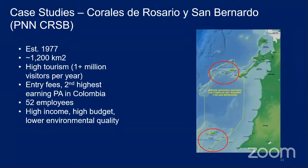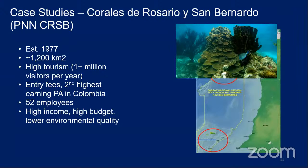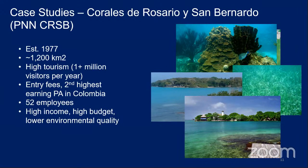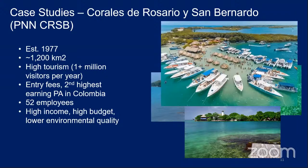Starting with Corales de Rosario in Colombia — this is an older MPA, established in 1977. It has the ecosystems you'd expect in a Caribbean marine national park: coral reefs, seagrass beds, mangroves, and coastal lagoons. It's the most highly visited protected area in all of Colombia, receiving about one to two million visitors per year, and through its entry fee system is the second highest-earning protected area in Colombia, with funds going to the Ministry of the Environment. It's an example of an MPA that produces high income and has a fairly high budget supporting about 50 employees, but as far as environmental quality may be on the lower end of the spectrum compared to its peers.